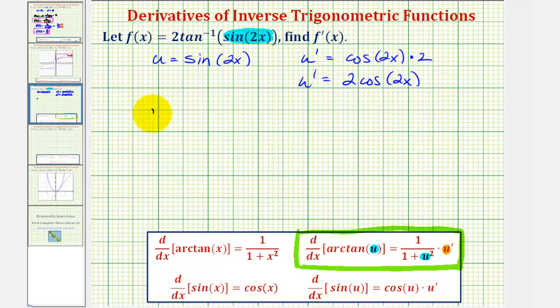Which means f prime of x, again is equal to two times the derivative of inverse tangent u, which would be one divided by the quantity one plus u squared, where u is sine two x, so we'd have sine two x squared, times u prime, which is two cosine two x.